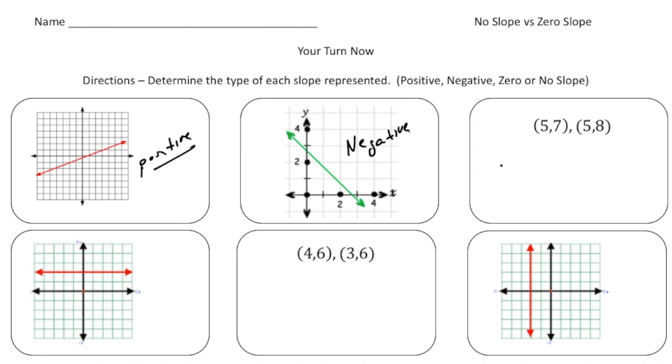Now this one we need to use the y2 minus y1 over x2 minus x1. So that's going to be eight take away seven over five minus five. And notice our denominator, right, is a zero. So when the zero is in the denominator, remember that's a no slope or undefined.